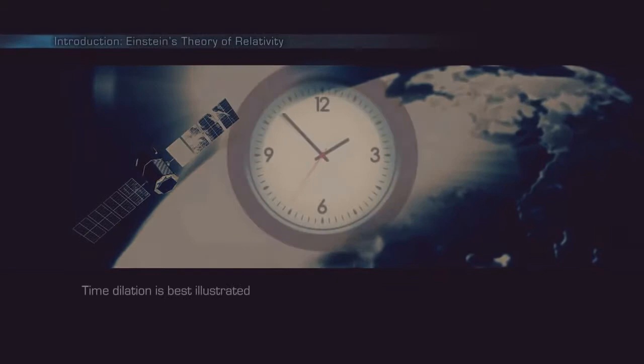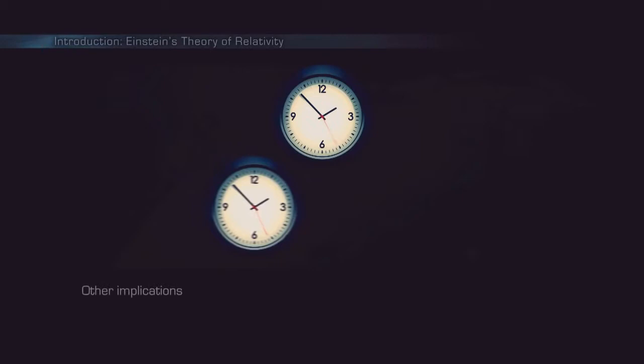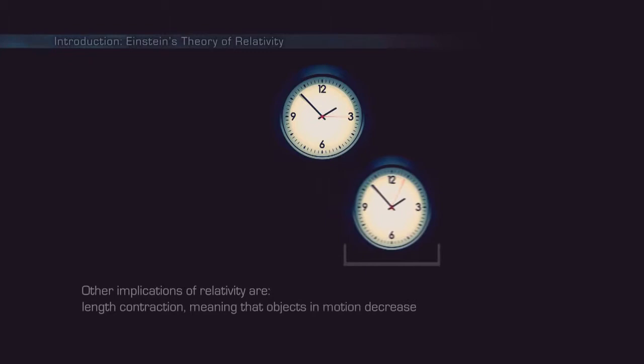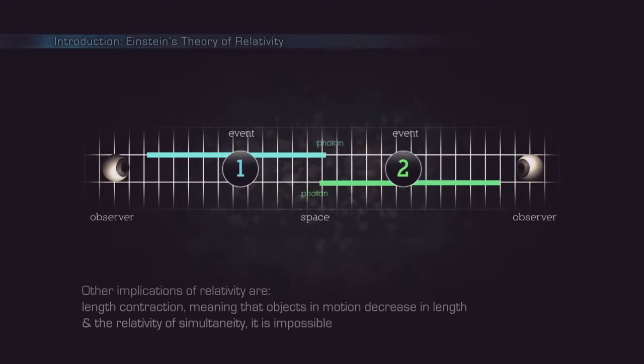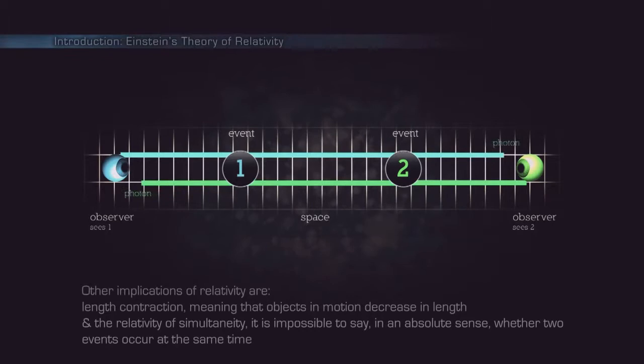Time dilation is best illustrated by how moving clocks run slower. Other implications of relativity are length contraction, meaning that objects in motion decrease in length, and the relativity of simultaneity. It is impossible to say in an absolute sense whether two events occur at the same time when they are separated in space.